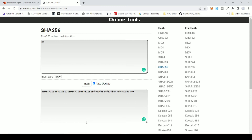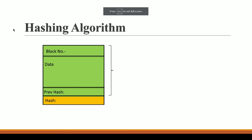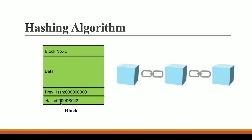This is a very important characteristic of a good hashing algorithm: for each and every input we should have an entirely different hash. No matter what I type, it never produces more than 64 hexadecimal characters. This is how SHA-256 works, and in blockchain the different input fields are passed to SHA-256 to generate the block's hash.